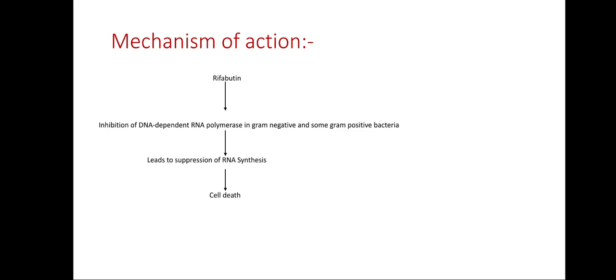Mechanism of action: Rifabutin leads to inhibition of DNA-dependent RNA polymerase in gram-negative and some gram-positive bacteria, which leads to suppression of RNA synthesis and causes cell death.